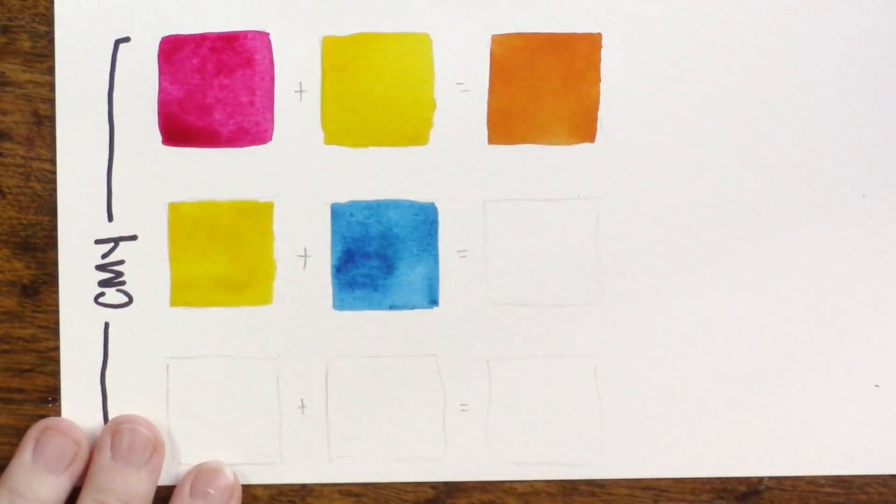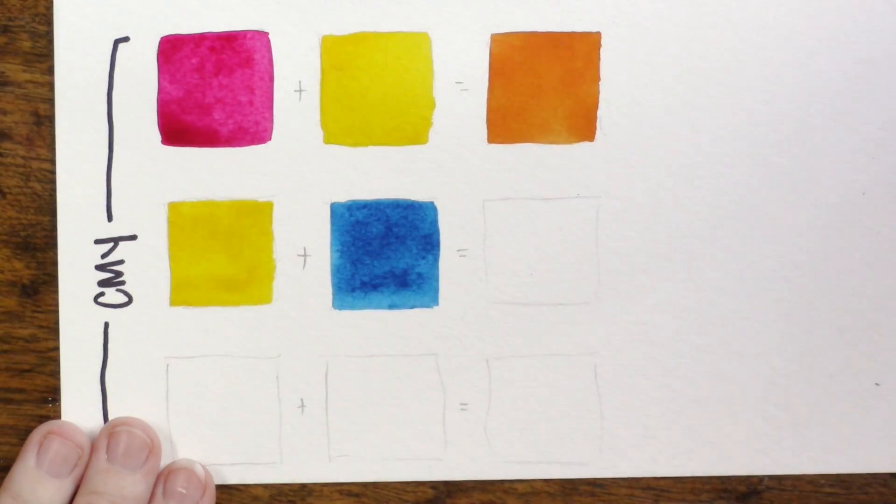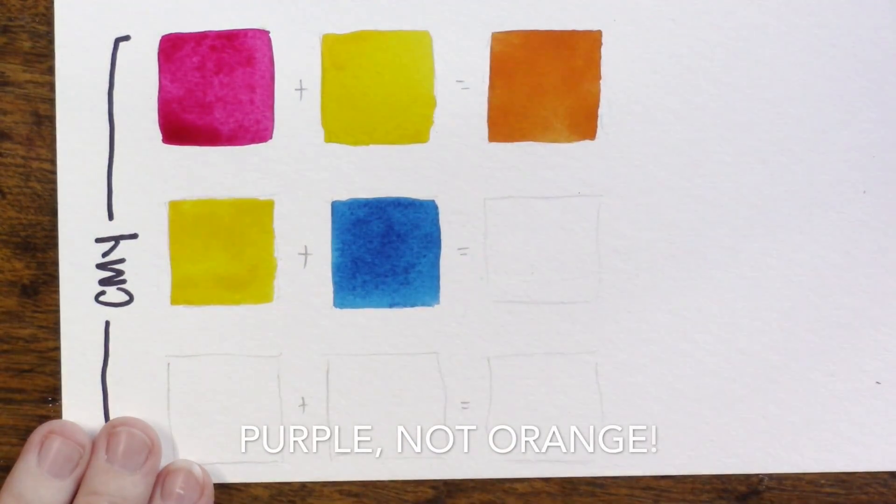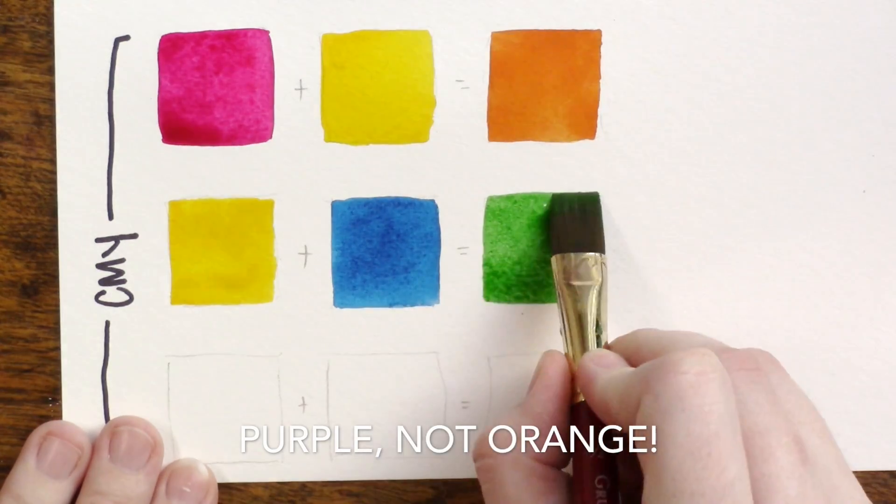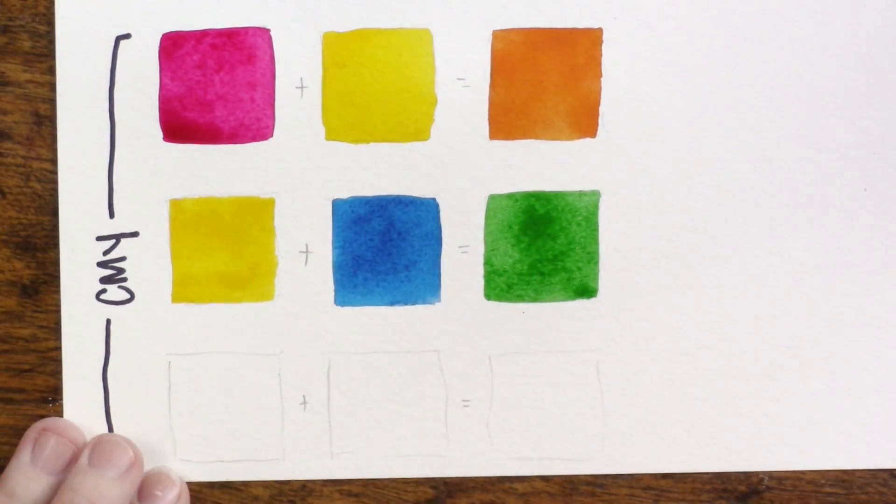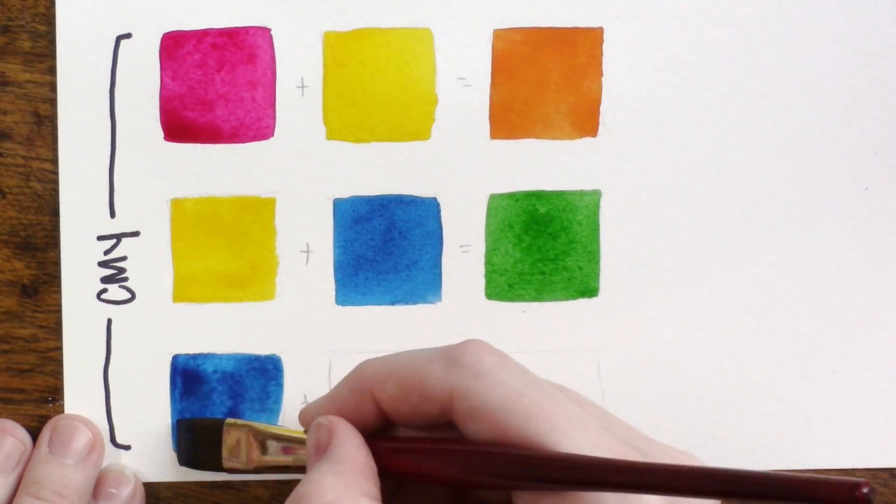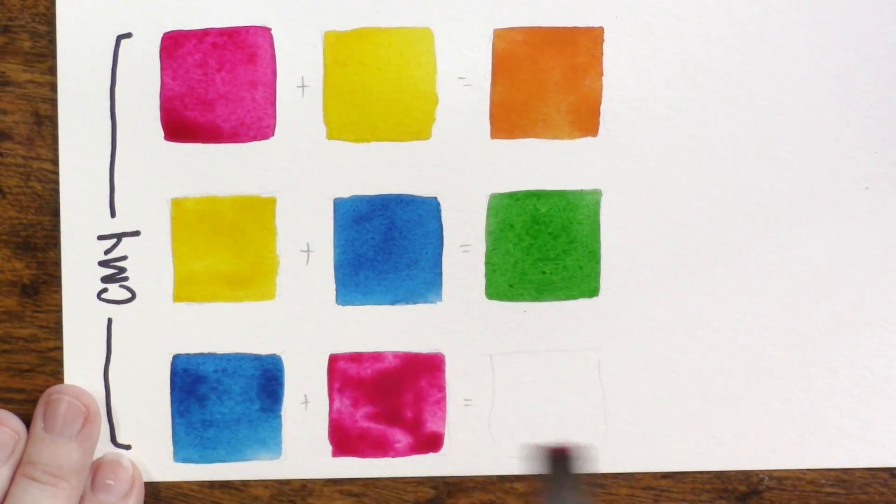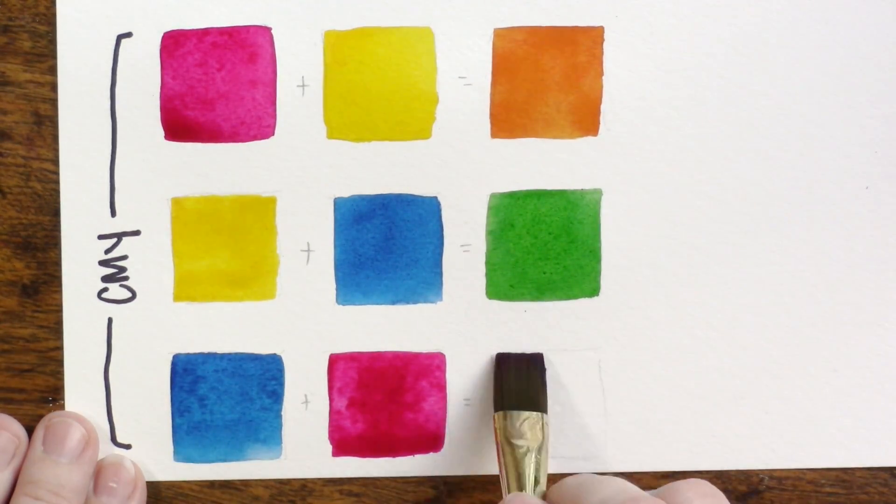You'll see here that the green and the orange in these color mixtures are much more clear, crisp, and vibrant. Those are the ones that use the Phthalo blue and then the yellow and magenta respectively. The orange is a little bit more muddied, but we're going to talk about that in more detail in just a moment.